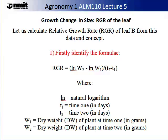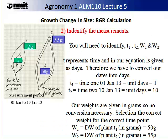Always make sure that you place your time in the same units. For this example, T2 will be 10 and T1 will be 0, therefore the change in time will be 10 days. With the change in weight, it is important to start your calculations with the weights in the same units, and ideally you would use SI units — in this case, weight should be determined in grams. Now that we have identified the formula, the second stage is to identify the measurements. For this, we will need to identify T1, T2, W1, and W2. T represents time and is given as days, so we have to convert our dates into days.